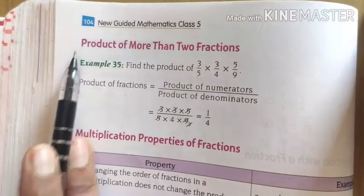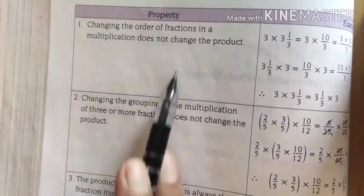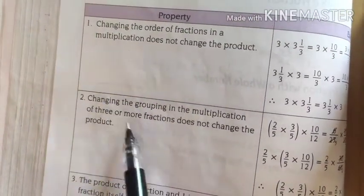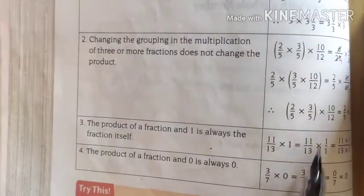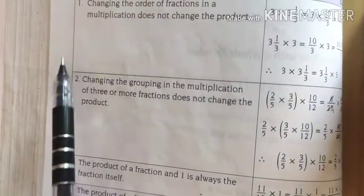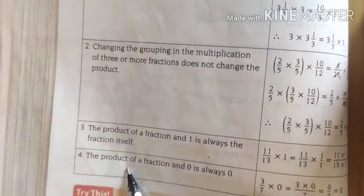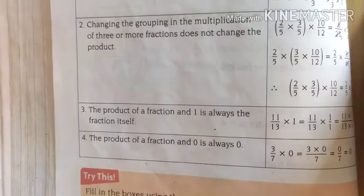Then on page number 104 we have some properties of multiplication. 1, 2, 3, 4 properties we are having here. We will not write these examples or we will not learn these examples but these 4 points. 1, 2, 3, 4. These 4 points we have to remember for the exam.